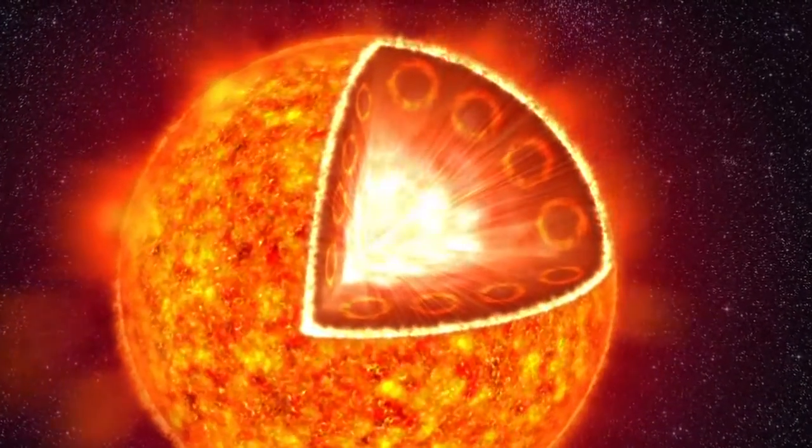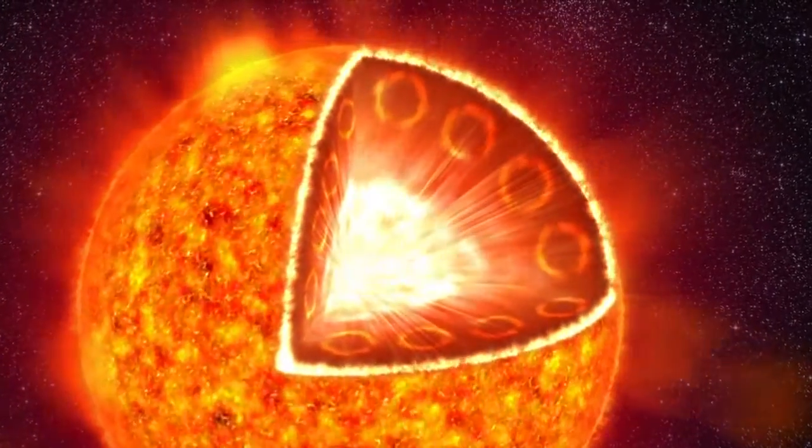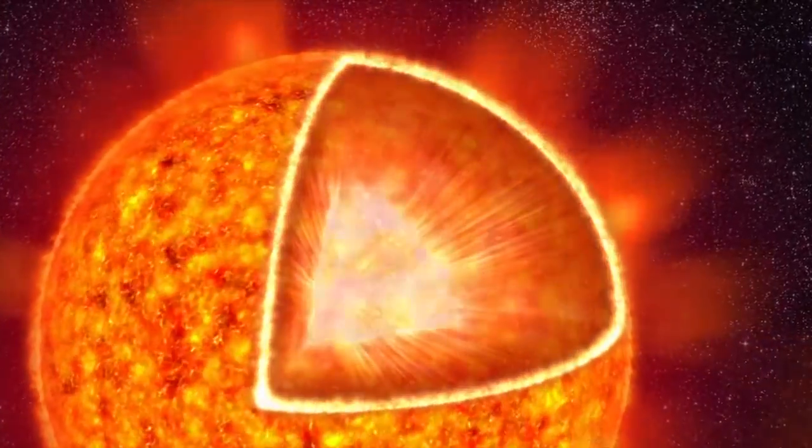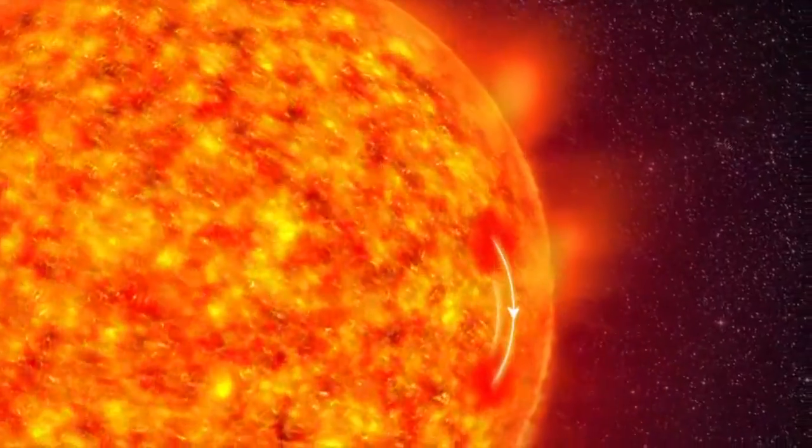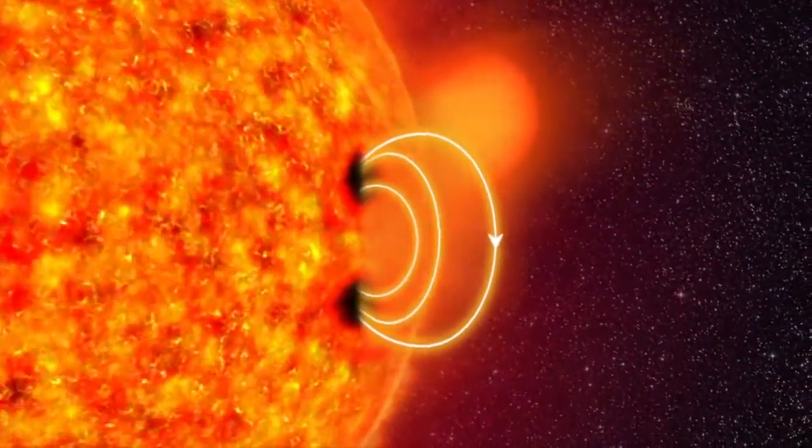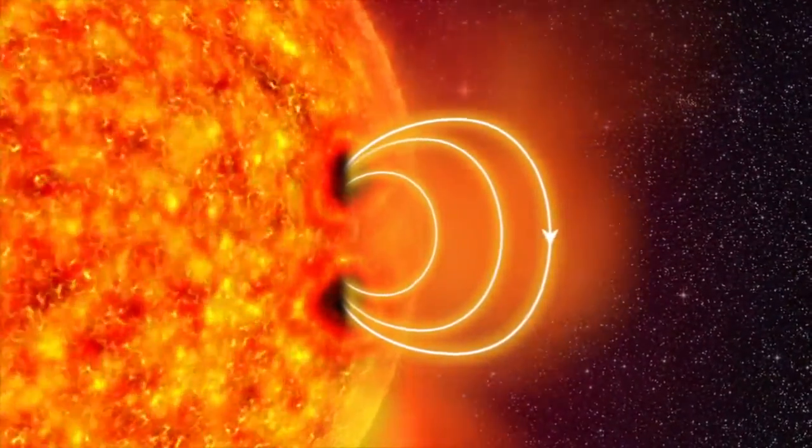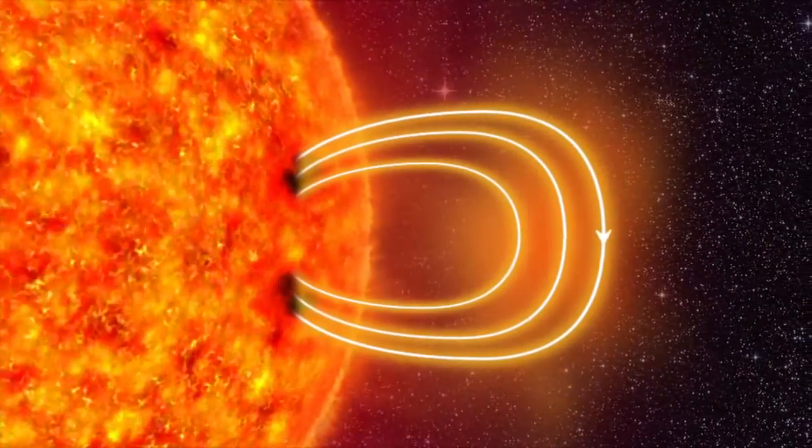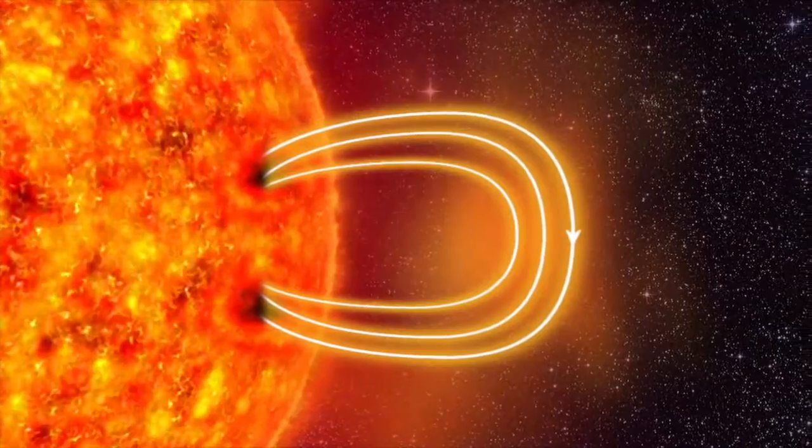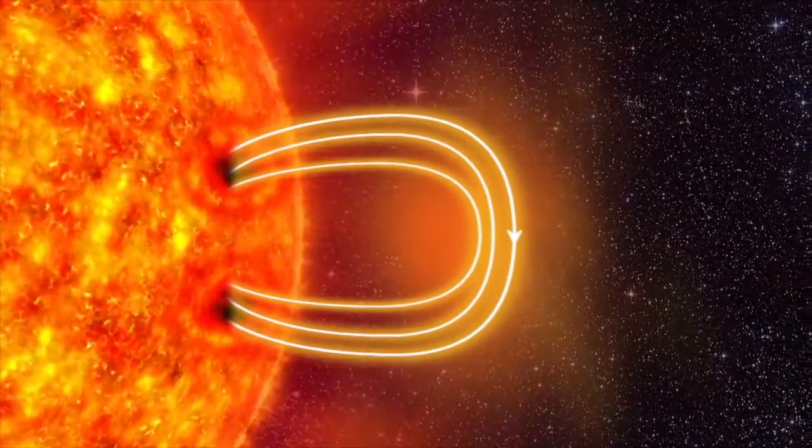These electrical currents of charged gas create magnetic fields inside the Sun. In some places, strong magnetic fields push their way up through the surface. They slow down the eddies of hot gas. The surface cools, and darker sunspots appear. The electrically charged gas is called plasma.